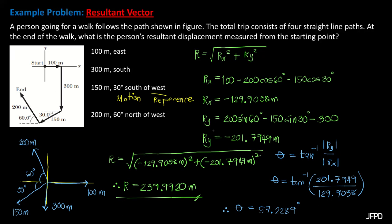For the proper direction, we locate the resultant by looking at the sign of Rx and Ry. Since both Rx and Ry are negative, the resultant is located in quadrant 3. This angle is measured from the negative x-axis, so the final direction is 57.2289 degrees south of west, since this is an angle measured from west going toward south.